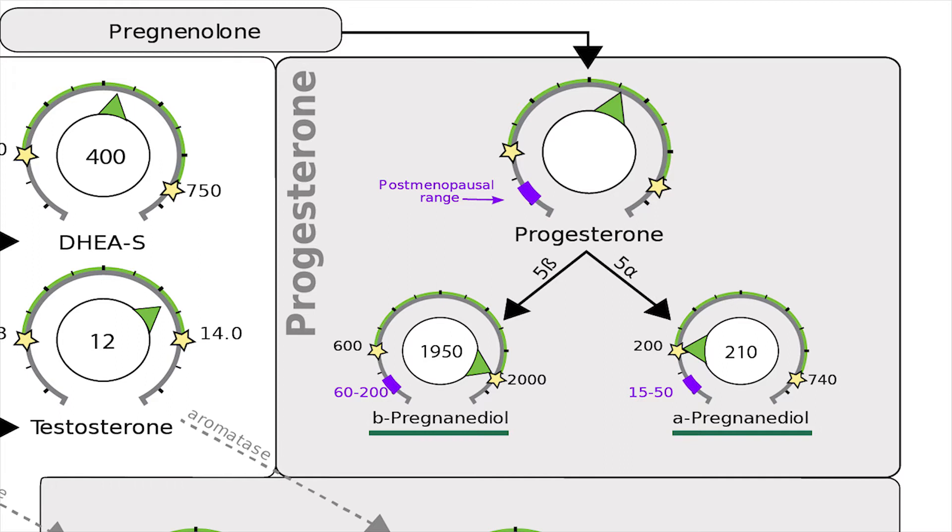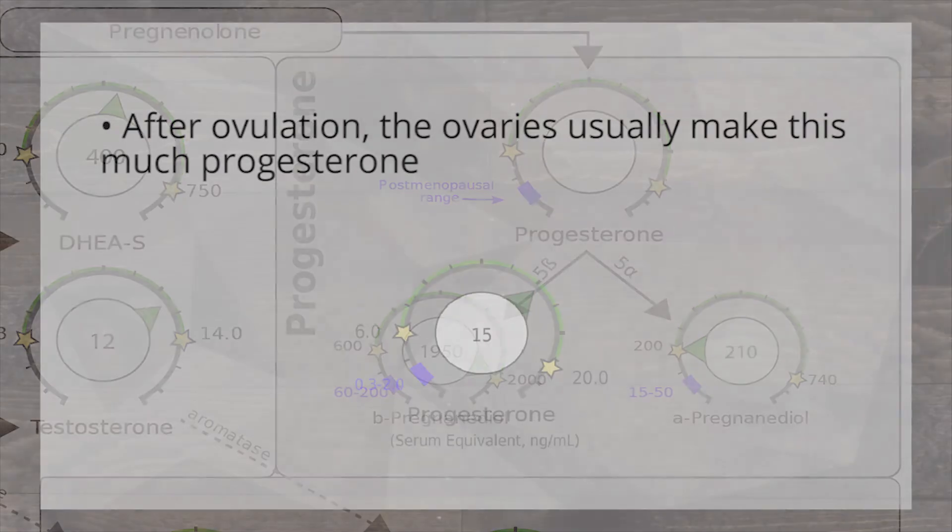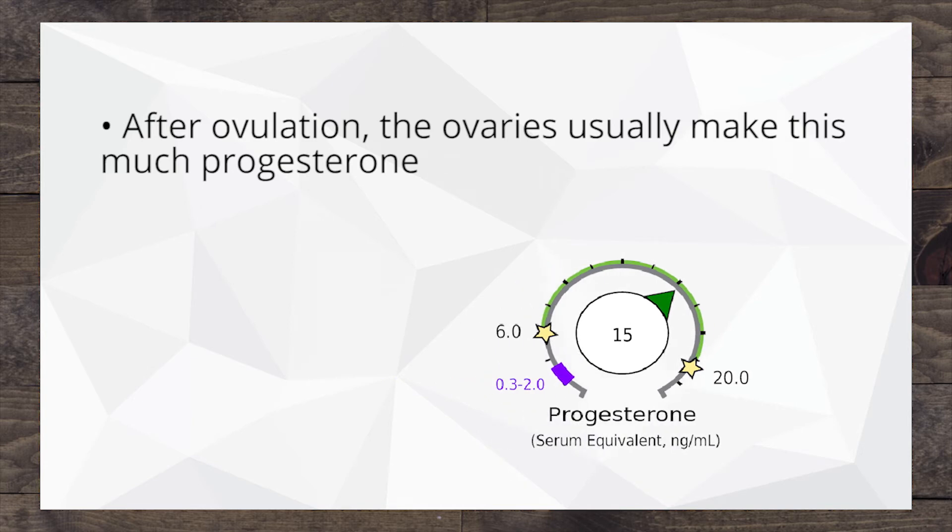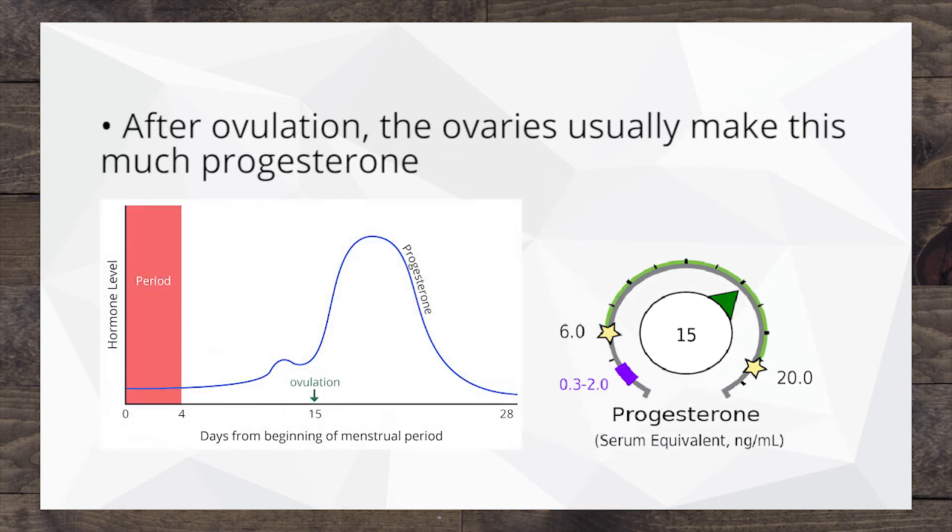Now we want to look at these numbers relative to the reference range. If we're looking at a female patient that is in the premenopausal phase of life and is collecting this in the luteal phase, that's that latter third of the cycle, day 19, 20, 21, we should expect to see her, if there's good strong ovulation and progesterone production, up between these two stars. A good strong progesterone will put a woman up in this upper part of the range.